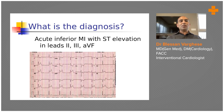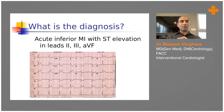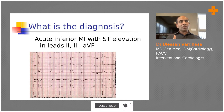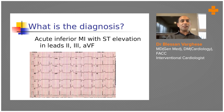This ECG shows ST elevation in leads 2, 3, and AVF. When we say ST elevation, it is the J point elevation. The J point is where the QRS complex ends and the ST segment begins - at the end of the S wave, or at the end of the downslope of the R wave. Not every lead necessarily has an S wave, so it's the end of the QRS complex where the ST segment starts. When the J point is elevated, that is ST elevation diagnostic of acute coronary syndrome - here it is a clearly inferior wall myocardial infarction.